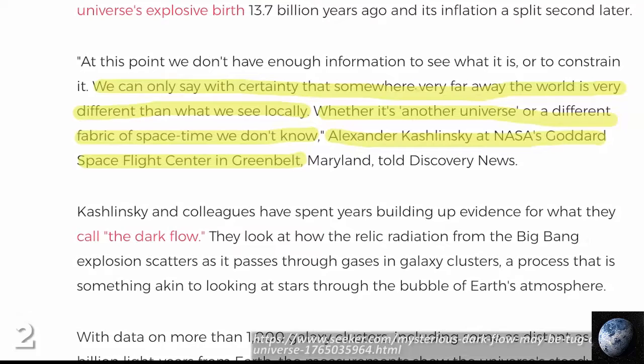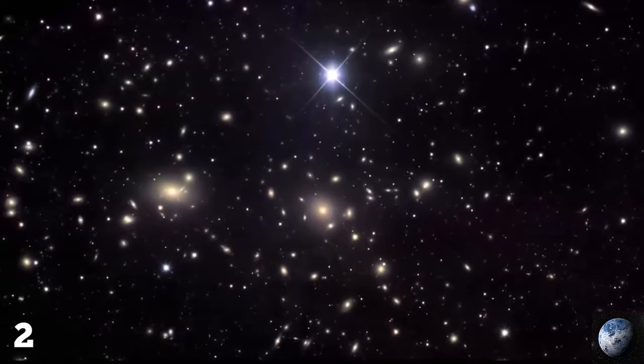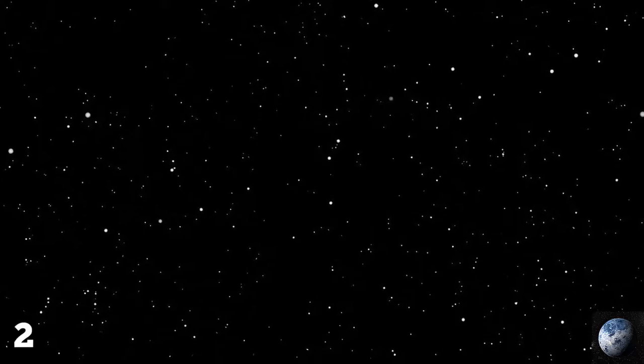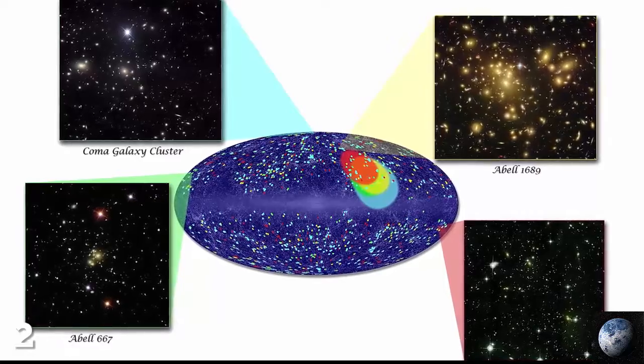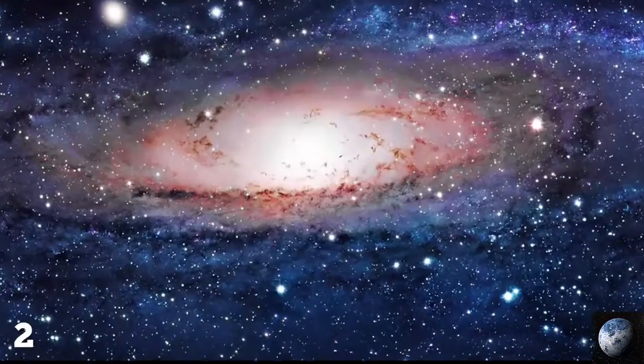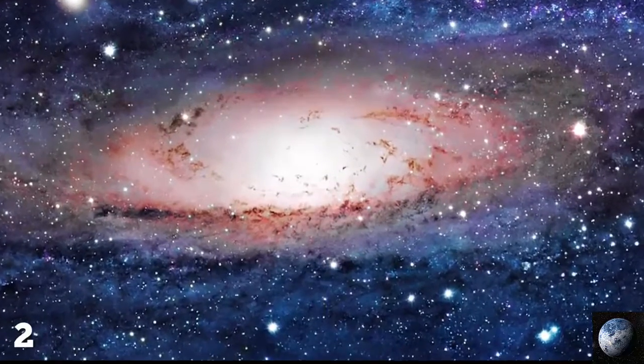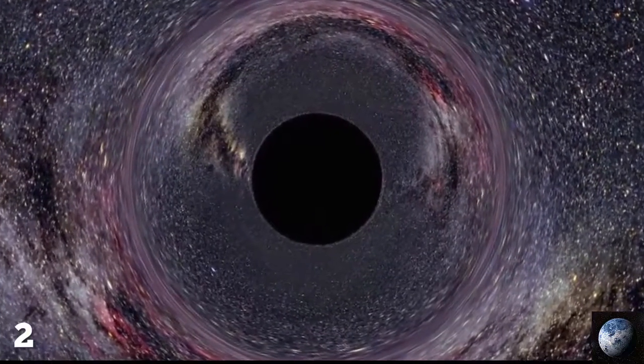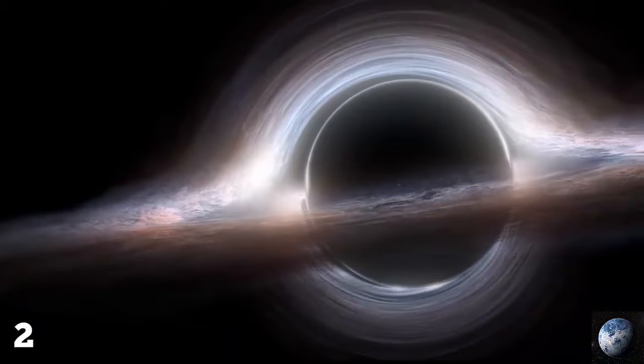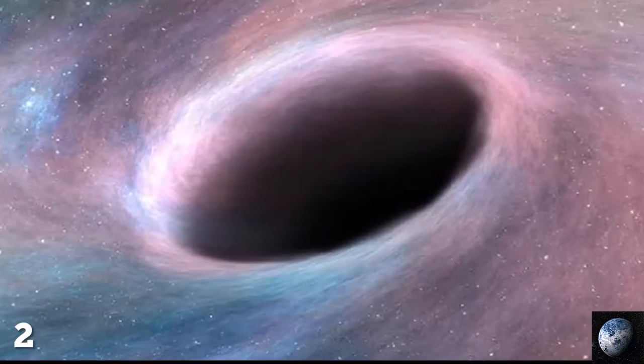One theory links this dark flow to our previous entry, the mirror universe, and claims that our bratty backwards sibling is the one responsible for tugging on our universe's coattails. Another mind-boggling theory says that this dark flow exists because our universe and everything we know resides inside a black hole. But this black hole isn't gigantic - it's just a regular-sized black hole like the ones inside our own universe.